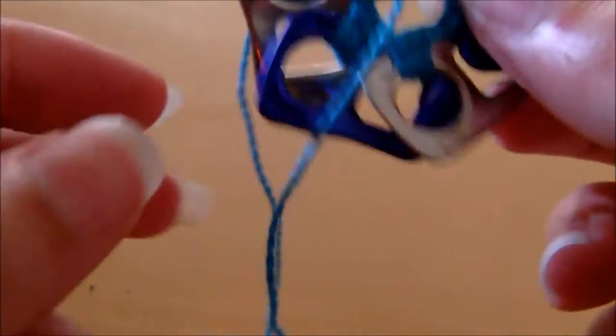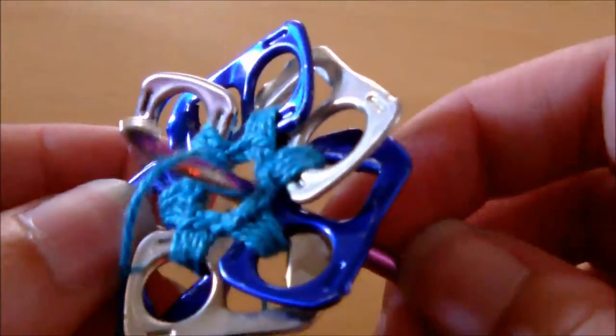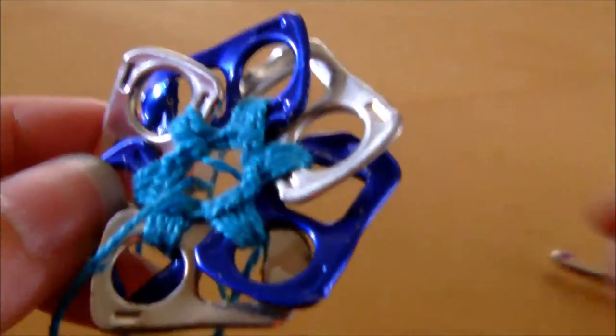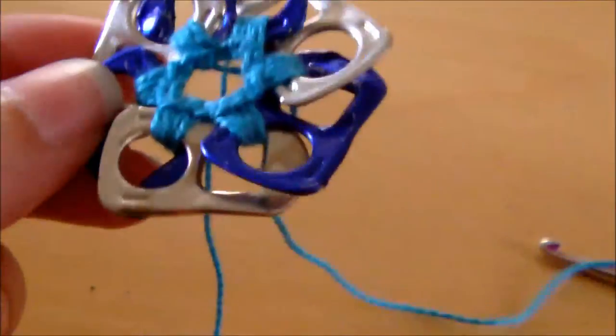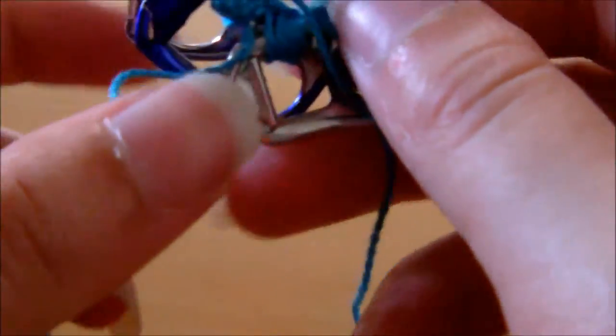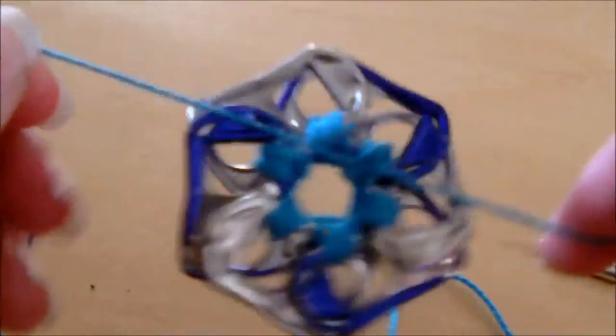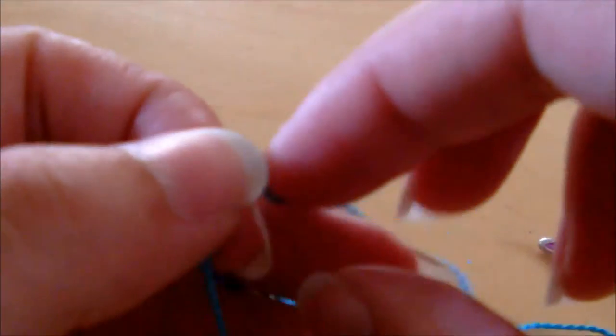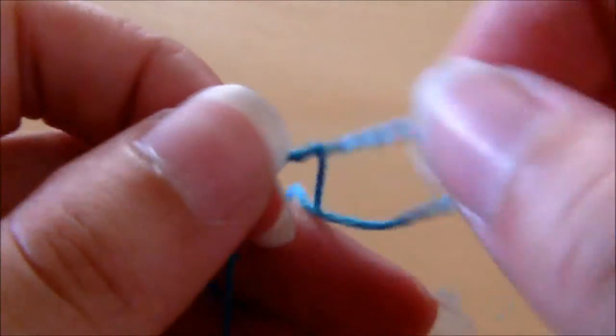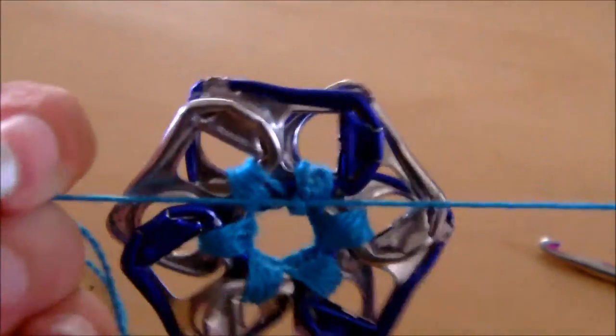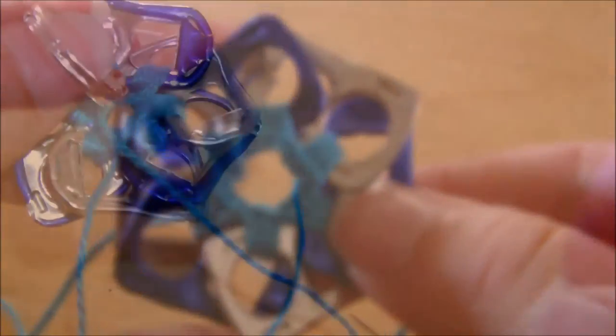And then you have to get both ends at the back, so the bit that you started with and the bit that you finished with, and just do a double knot in the back there. Okay, and then you just have to add it to the ring now. Okay, so there's your little flower.